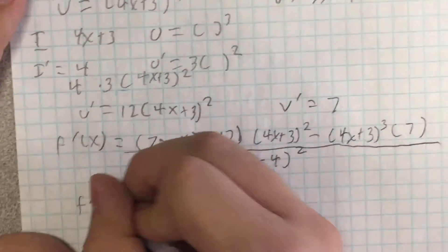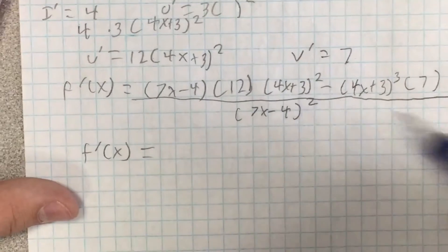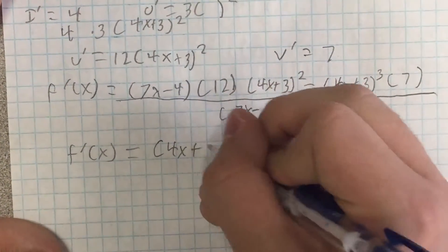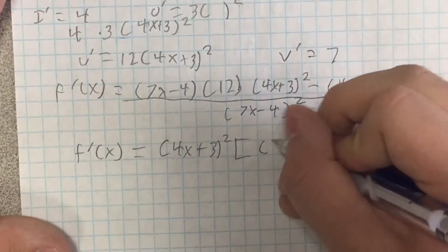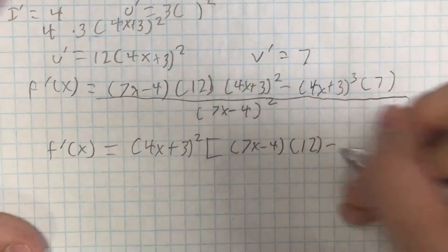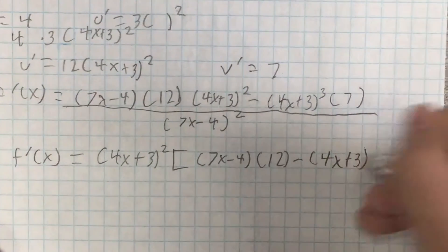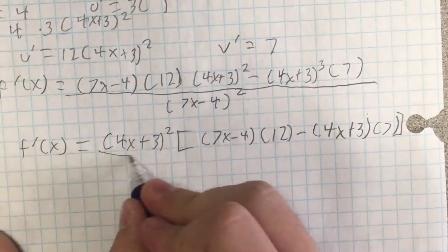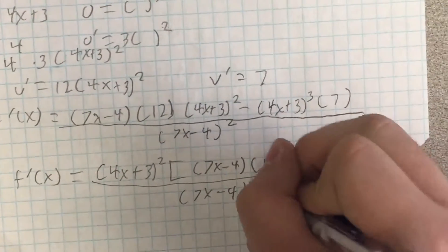So now what we're going to do is simplify this by factoring out our 4x plus 3. We can factor out 4x plus 3 squared. Then we're going to use brackets to show 7x minus 4 times 12, minus — we still have one more 4x plus 3 left on this side — times 7. That's still all going to be over 7x minus 4 squared.